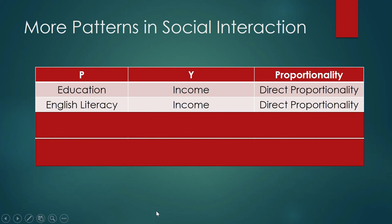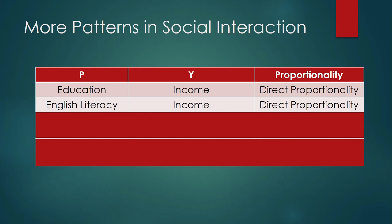It's the same with opening a bank account — many people in our country would not open a savings account because they are discouraged by the application form. The same applies for claiming SSS benefits, GSIS benefits, and PhilHealth benefits. You need to be literate in English in order to take advantage of those benefits. So the relation between income and English literacy, as I see it, is one of direct proportionality.